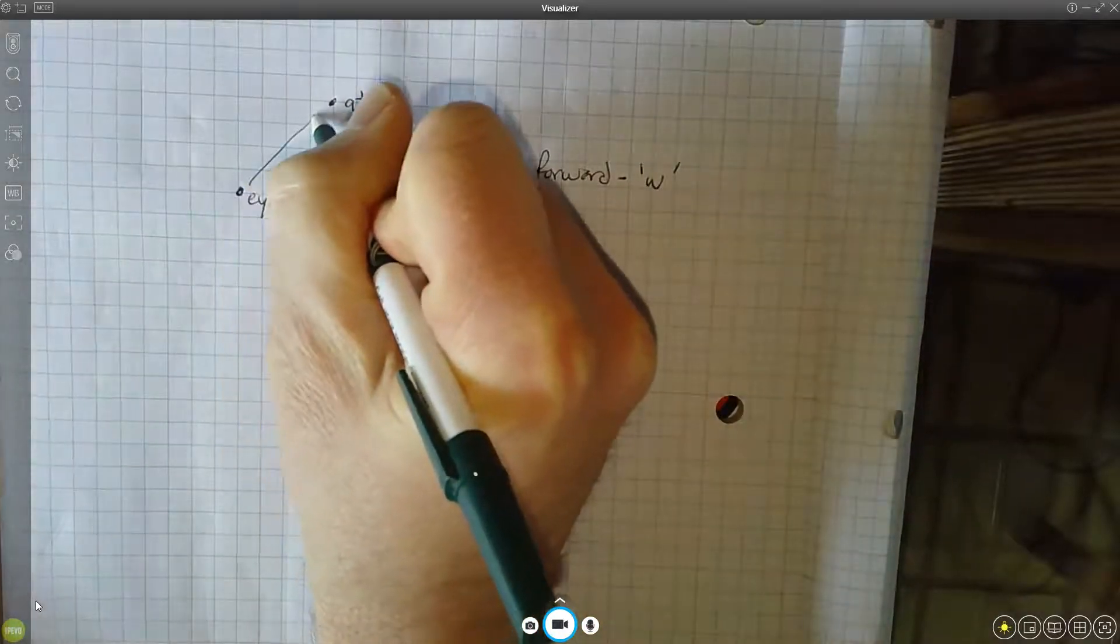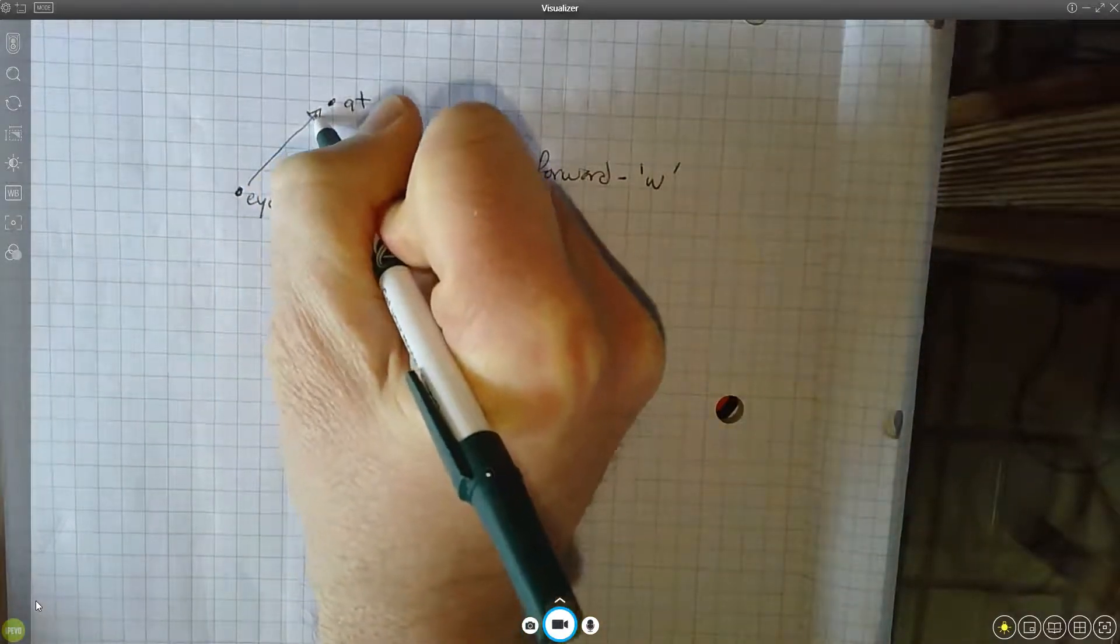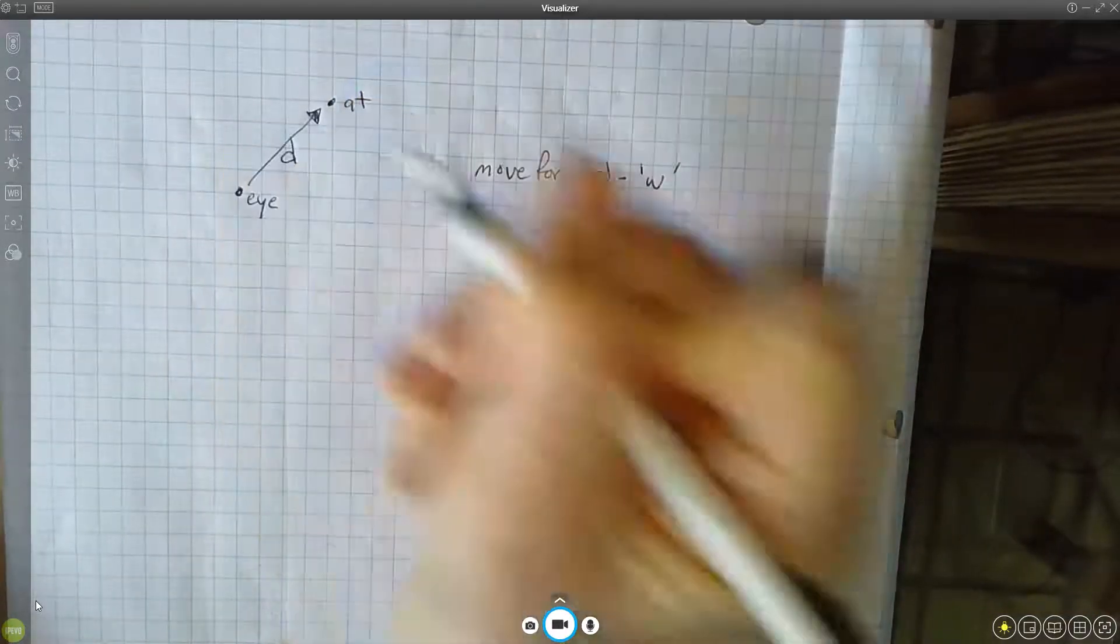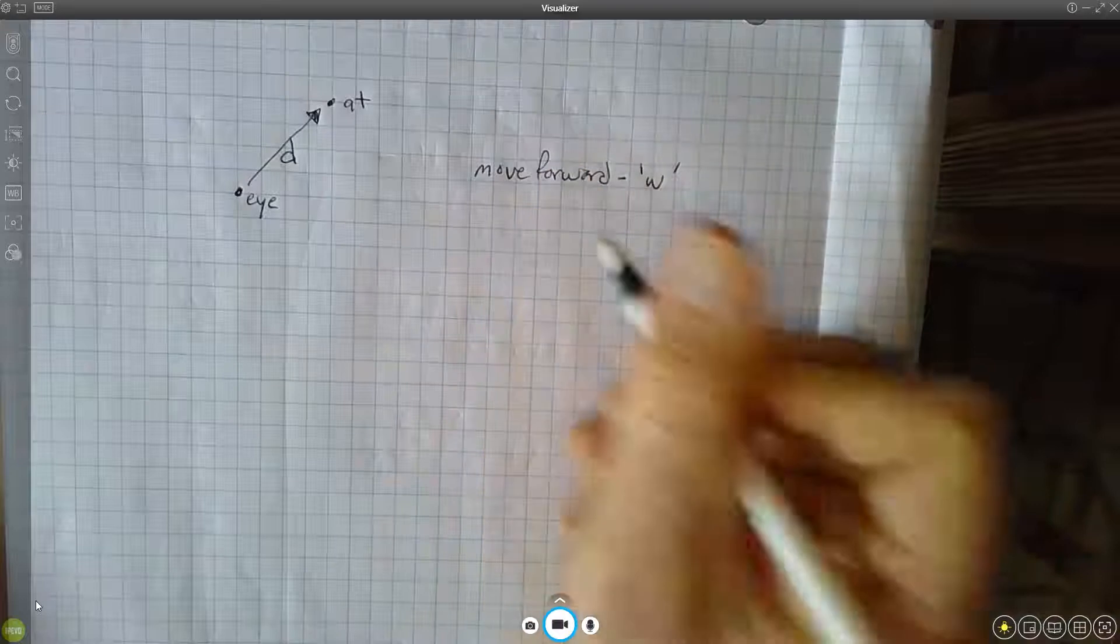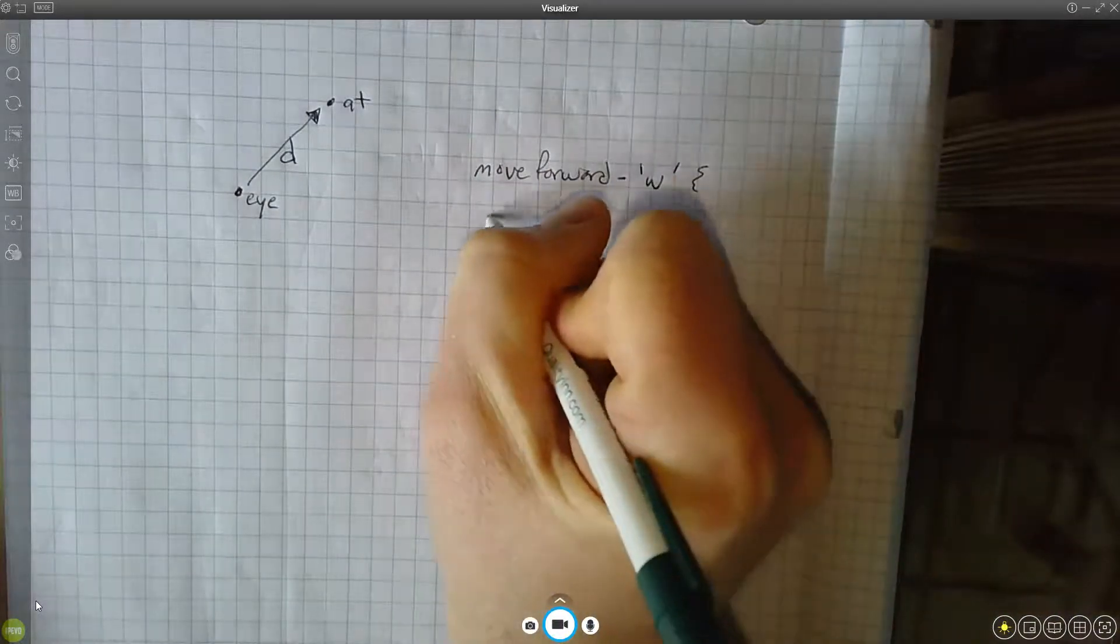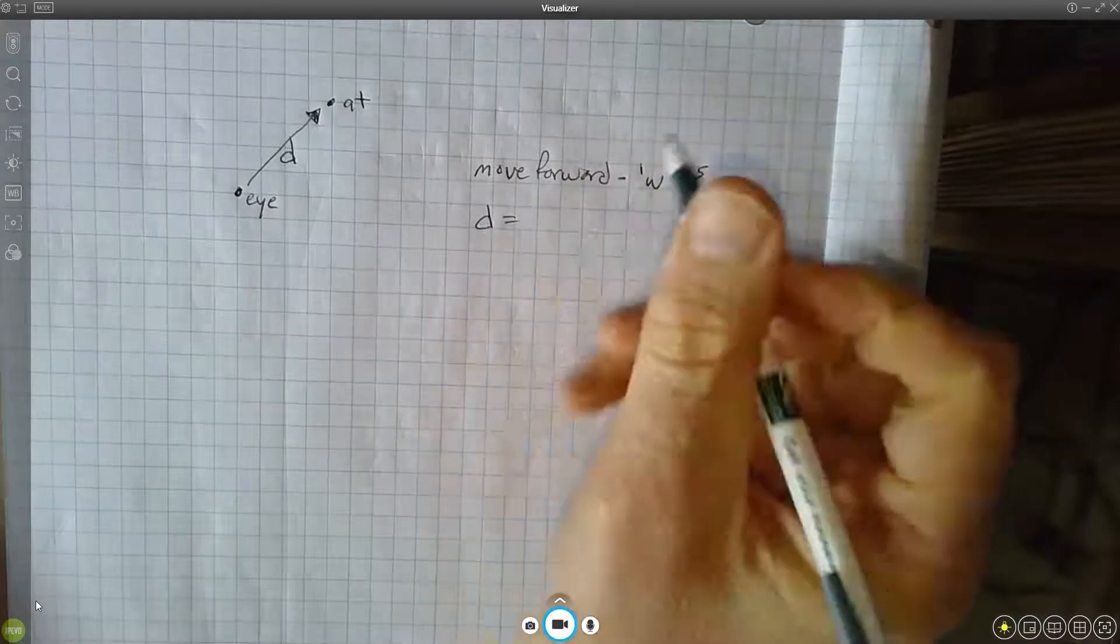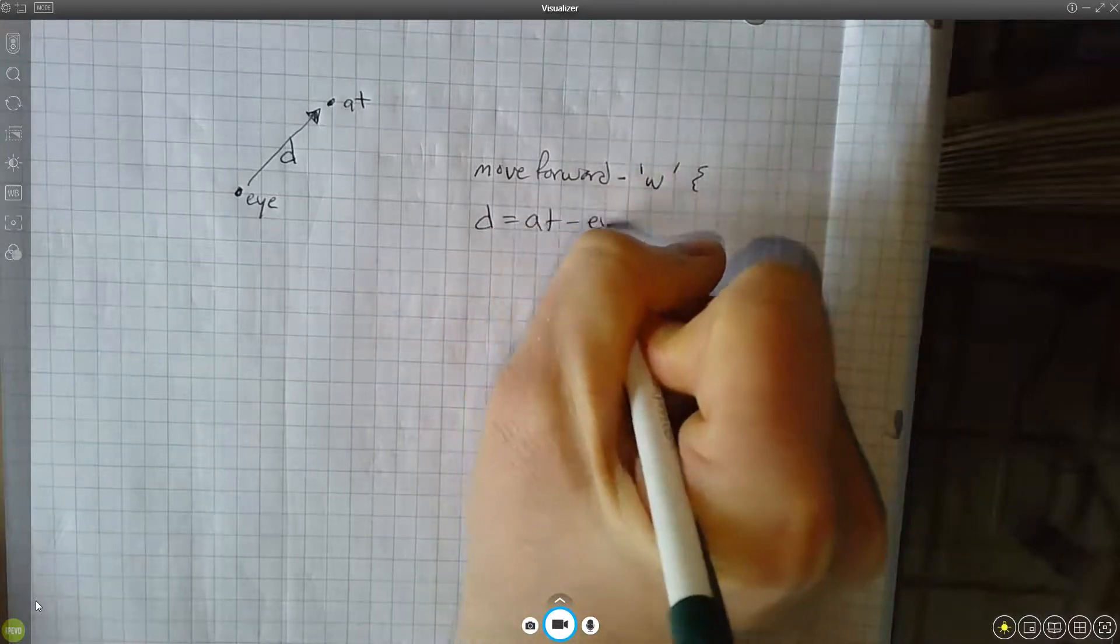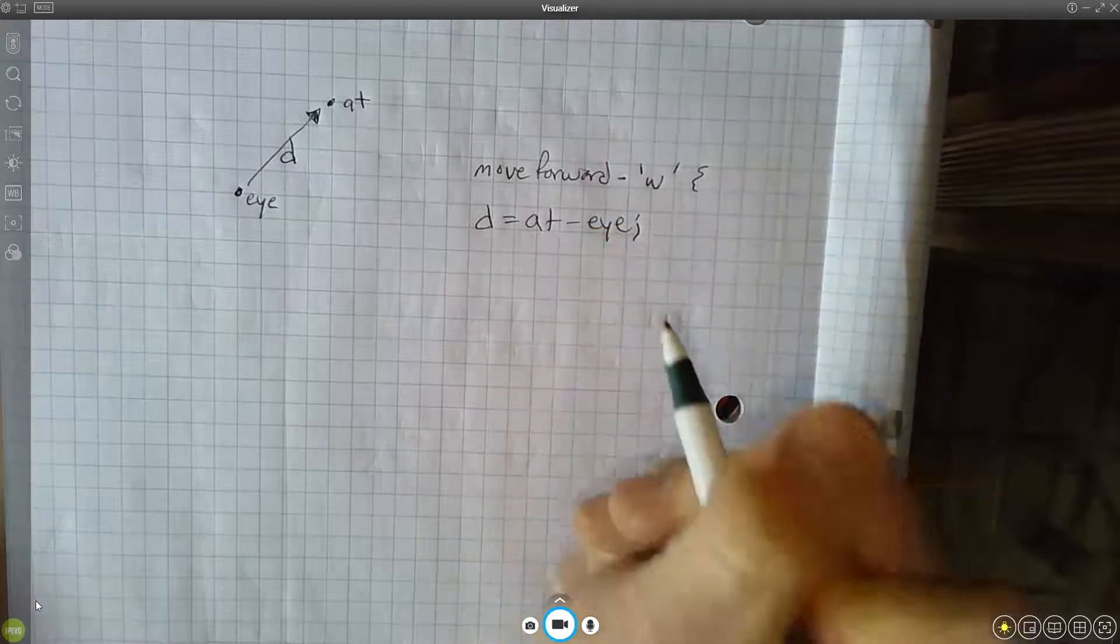So what is move forward? Well, we need to know what's the forward direction, so we need to find this vector here. So we're going to call this vector d. So move forward is going to look like we have to find d, so d is at minus i.